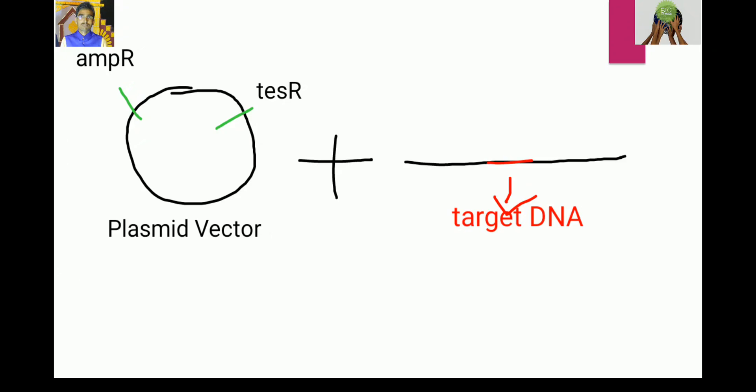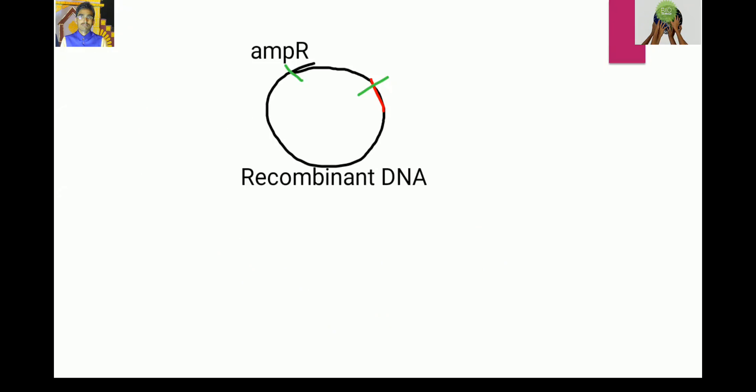Then RE, restriction endonuclease, is applied to plasmid vector and a fragment is cut out. And then RE is also applied to our target DNA to cut it and then ligated and recombinant DNA is formed.